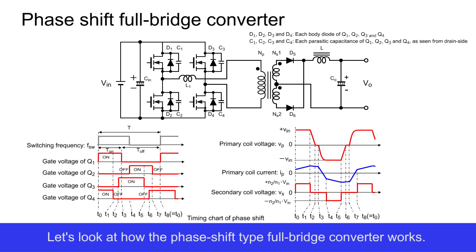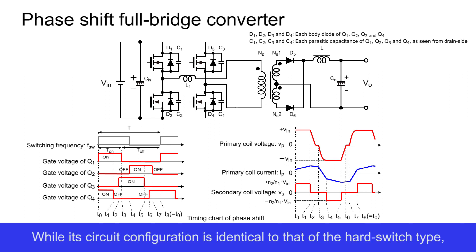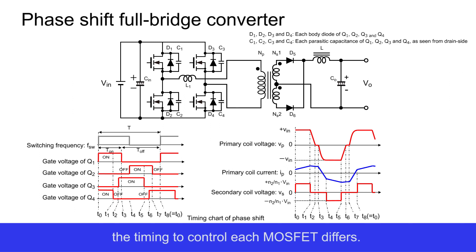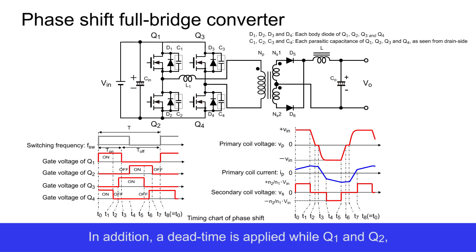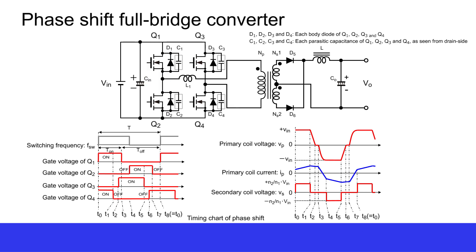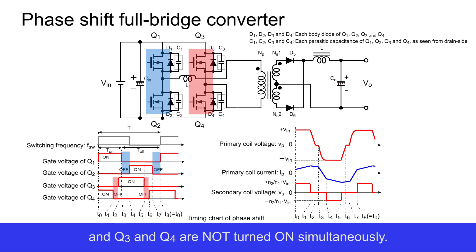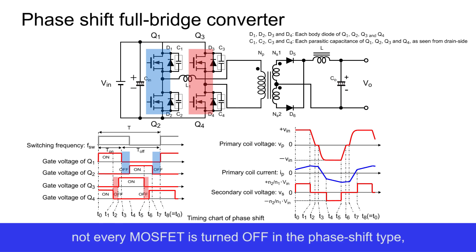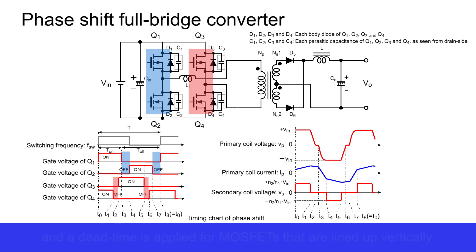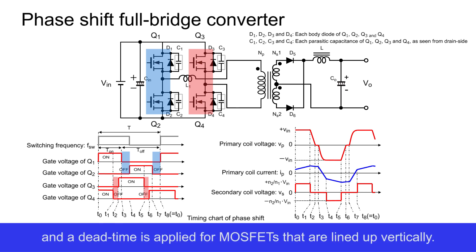Let's look at how the phase shift type full bridge converter works. While its circuit configuration is identical to that of the hard switch type, the timing to control each MOSFET differs. Timing is divided into eight segments. A dead time is applied while Q1 and Q2, and Q3 and Q4, are not turned on simultaneously. Not every MOSFET is turned off in the phase shift type; instead, a dead time is applied for MOSFETs that are lined up vertically.